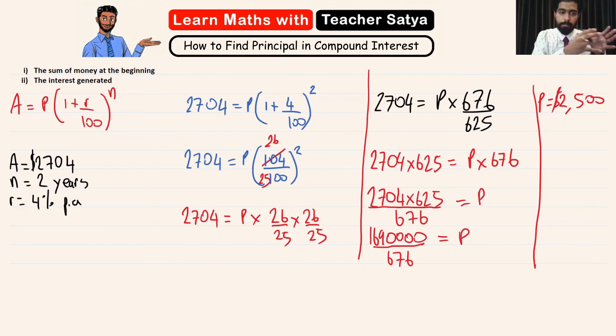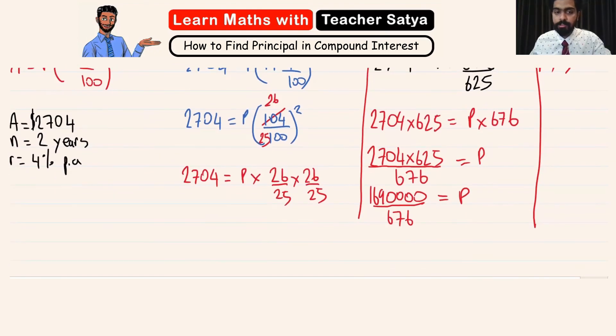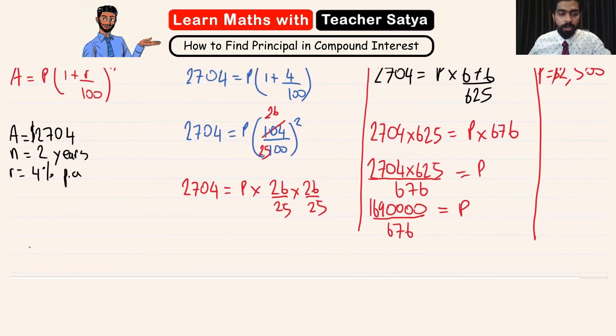But keep in mind this question is still not finished. We still have to find the amount of interest generated. So in order to find the CI, the formula of CI is amount minus principal.